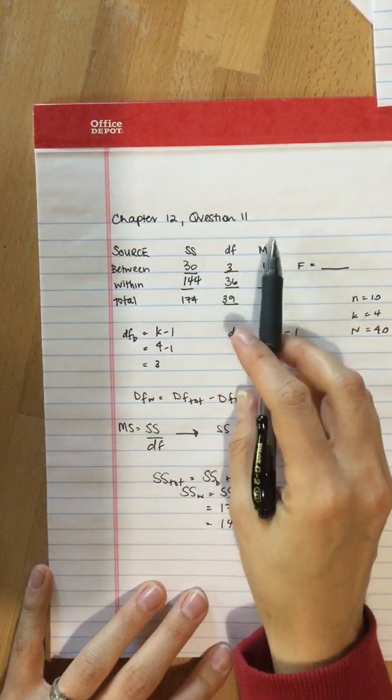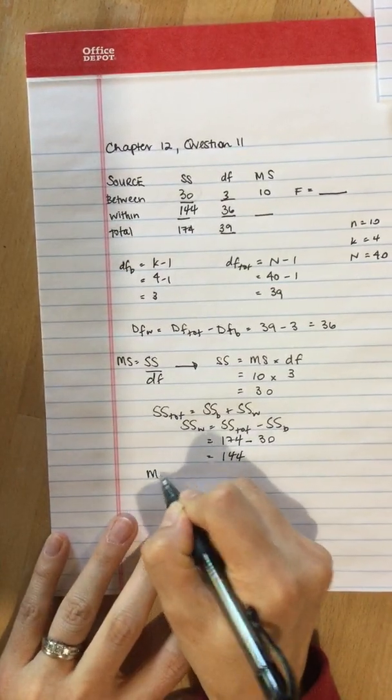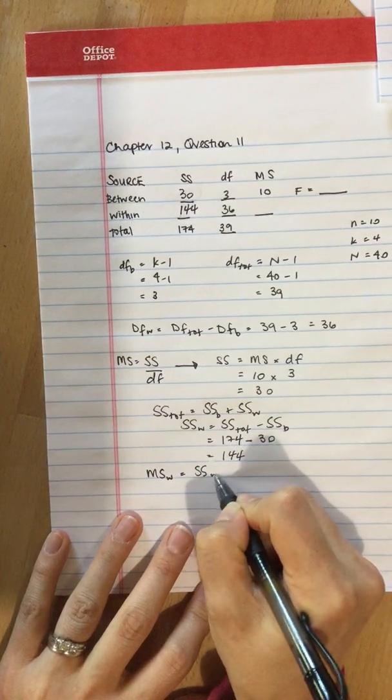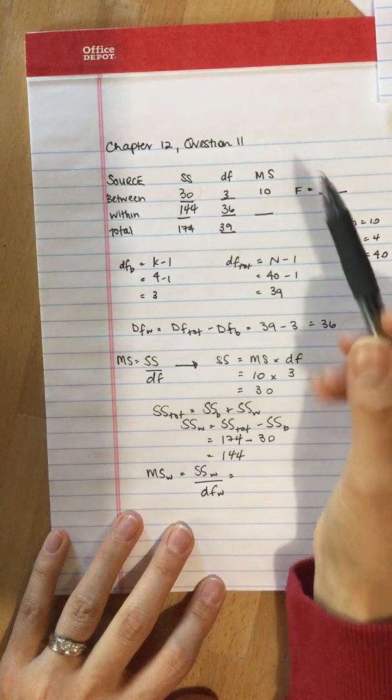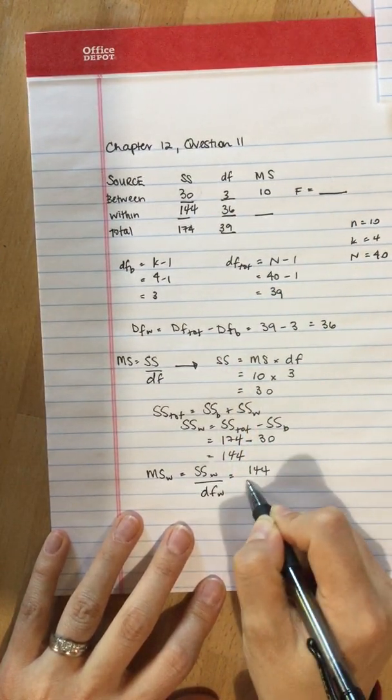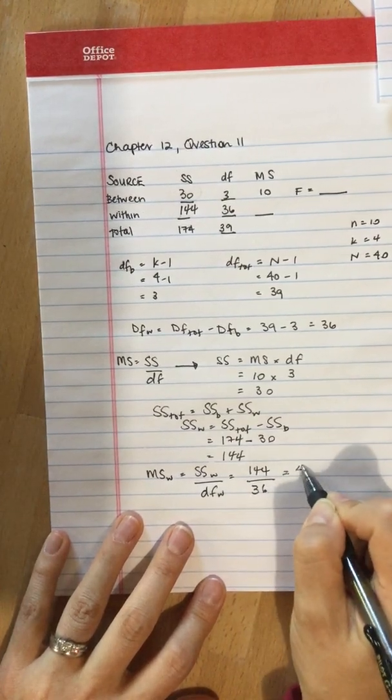With this we can calculate the mean square within. So mean square within is equal to the sum of squares within divided by the degrees of freedom within. So that is the sum of squares within, 144, divided by 36, which is 4.